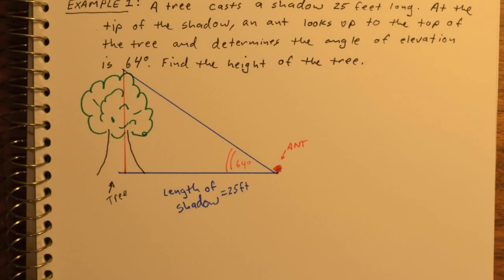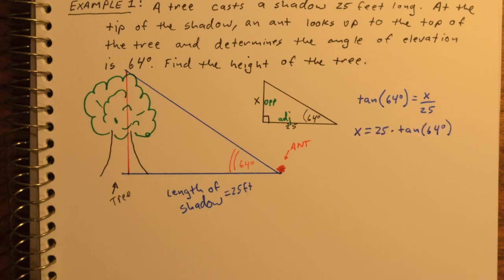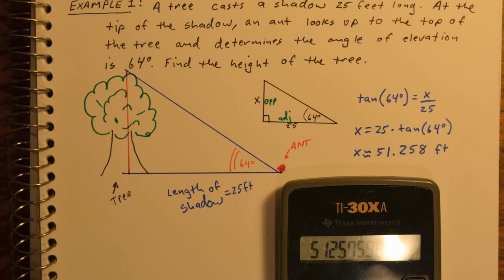We'll just use trigonometry. If you recreate that triangle, we have 64 degrees as the reference angle, 25 is the adjacent, and x is the unknown opposite. Since we want to find the opposite and we know the adjacent, we'll use the tangent function. So tan(64°) = x/25, therefore x is about 51.258 feet. So the tree is just about 51.258 feet tall.